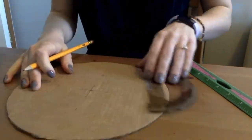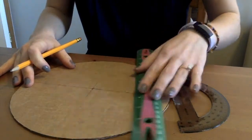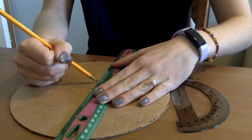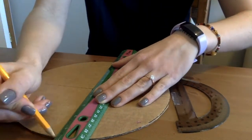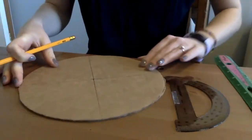Flip the protractor and find the 90 degree angle on the other side of the line and then connect both of these ticks with each other with your ruler. Now you have divided your circle into equal quarters.